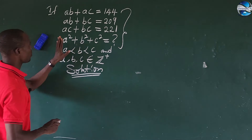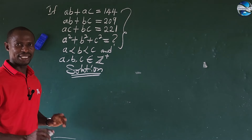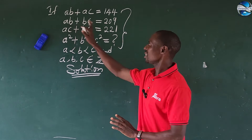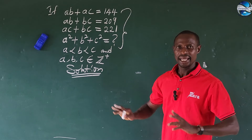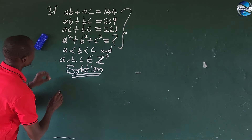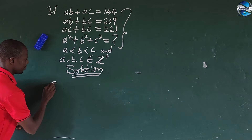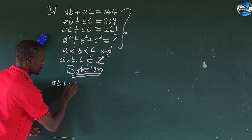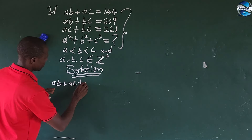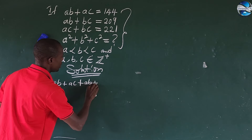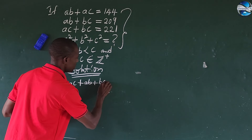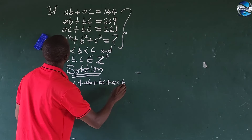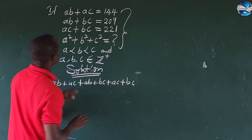The first thing we're going to do here is to get what is called the solver equation. How do we get the solver equation? We have to add the three equations together. So the first expression we have is: AB plus AC plus AB plus BC plus AC plus BC.